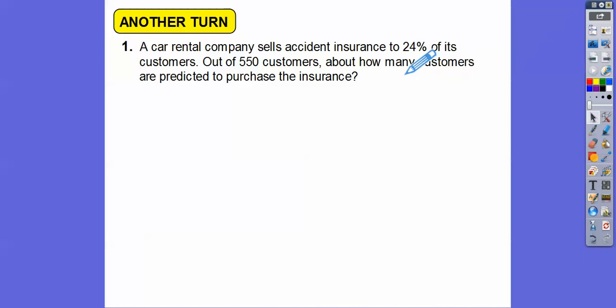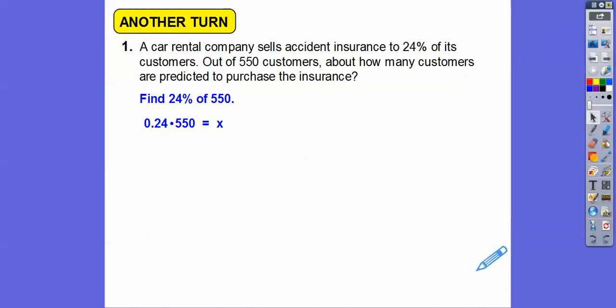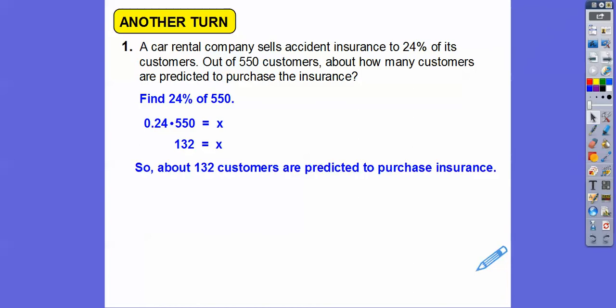So 24 over 100 equals x over 550. But I'd just rather do 24% of 550. To me, that's easier, especially when we have calculators. So 0.24 times 550. Let's just go ahead and do that. So 0.24 times 550, and that gets me 132.